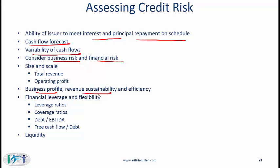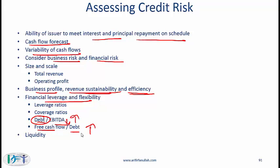Look at the business profile — revenue sustainability and efficiency. If revenue is sustainable and the company is operating efficiently, credit risk is low. Examine financial leverage and flexibility: high leverage ratios mean high risk, high coverage ratios mean low risk. A high debt-to-EBITDA ratio is a negative. Free cash flow to debt — high free cash flow and low debt means a high ratio, which is good. You are also looking for high liquidity ratios.